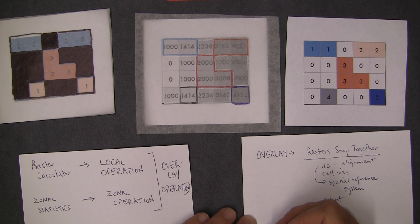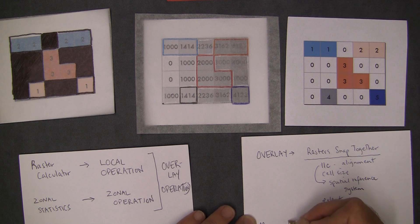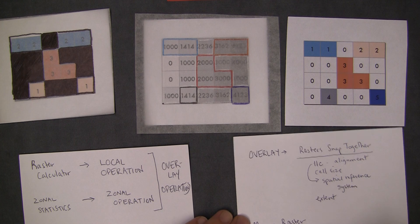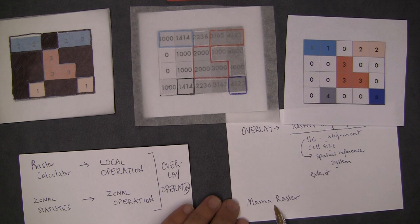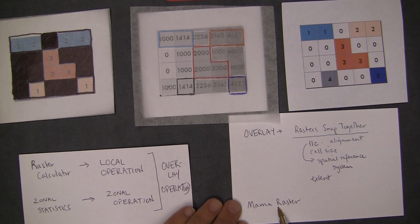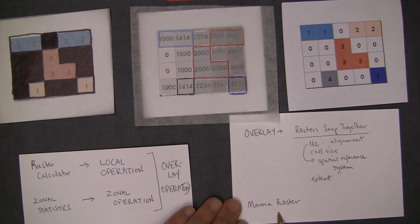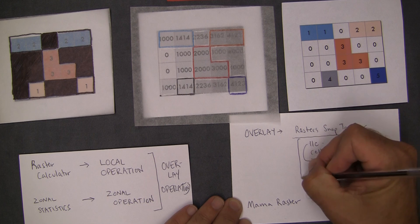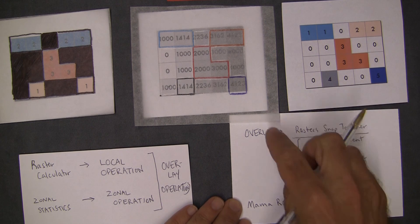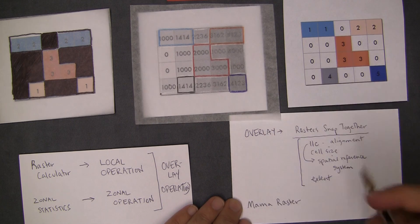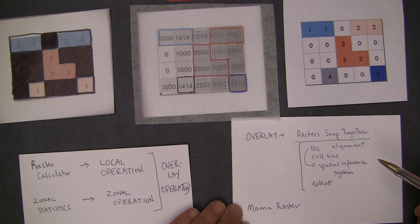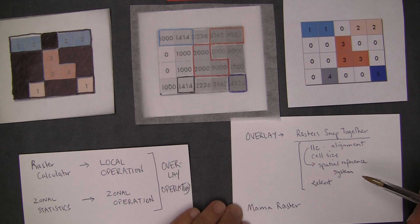And so this mama raster idea is that we're going to choose a raster in our analysis from which we always borrow these parameters. When we are doing an overlay operation or whenever we're making a new raster. Does that make sense?